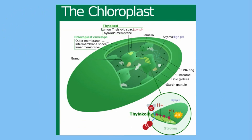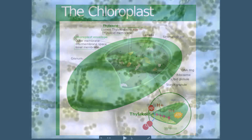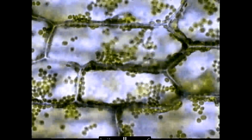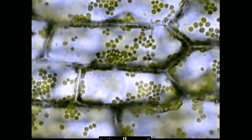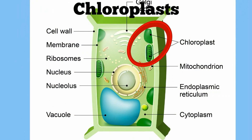Take a look at these chloroplasts moving in this plant cell. Chloroplasts are important to cells because they are the site of photosynthesis. Chloroplasts get their green color from chlorophyll, which helps change sunlight to chemical energy.